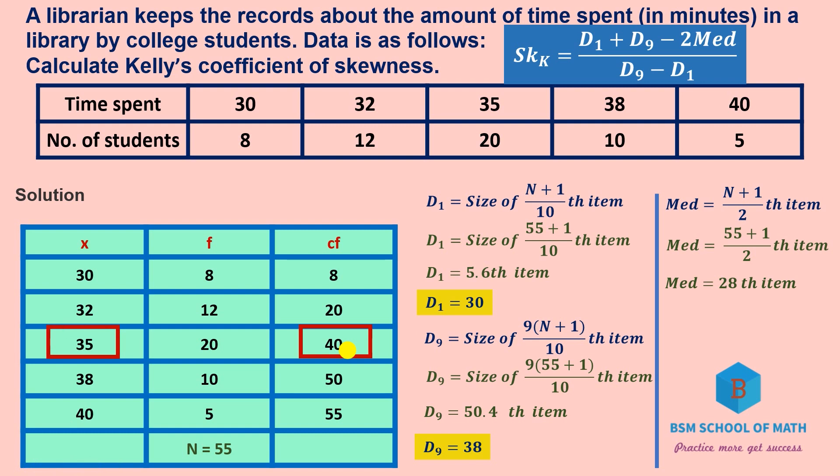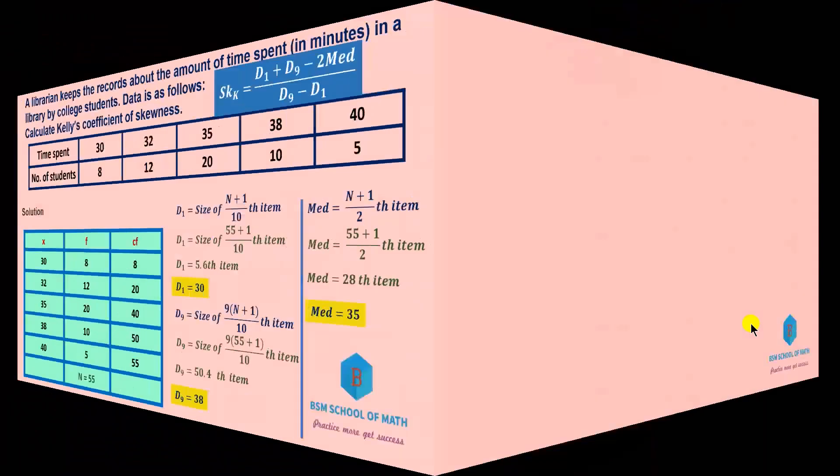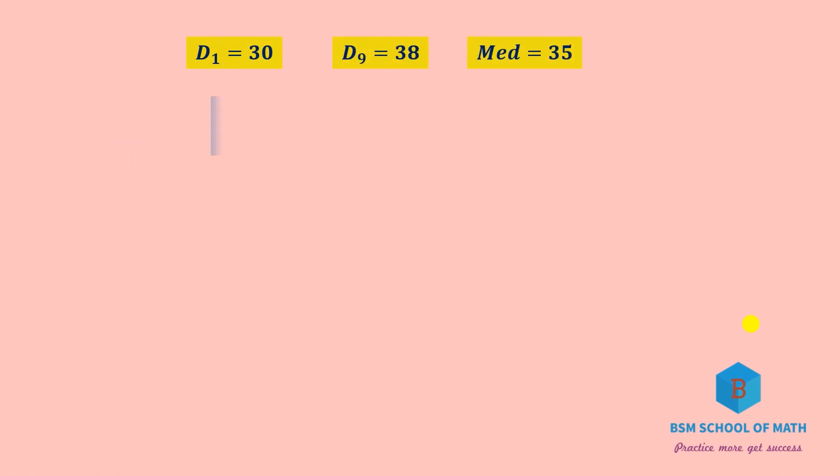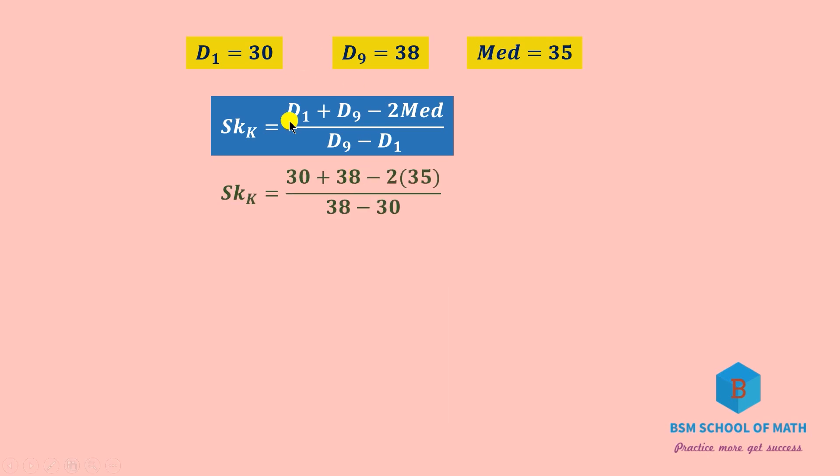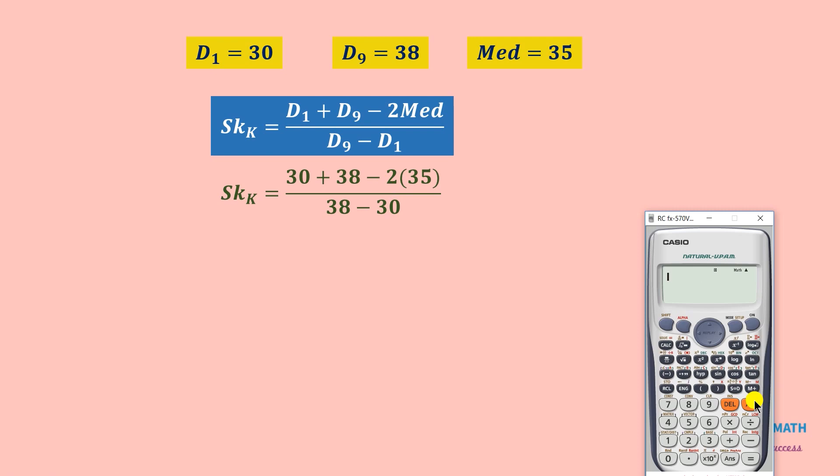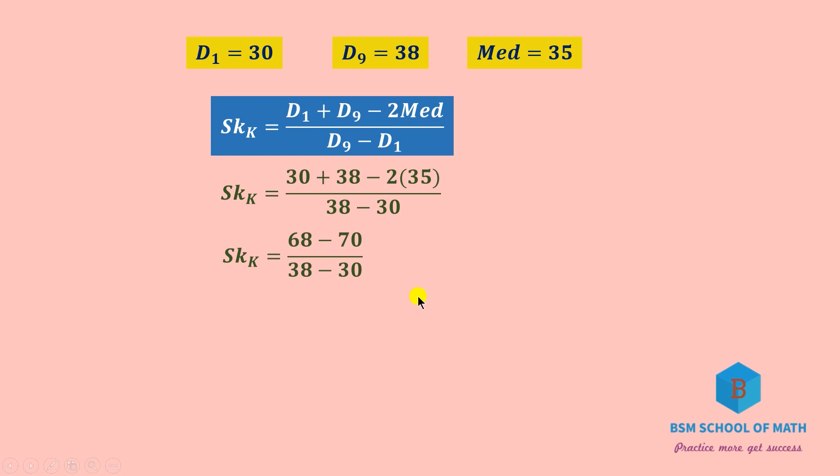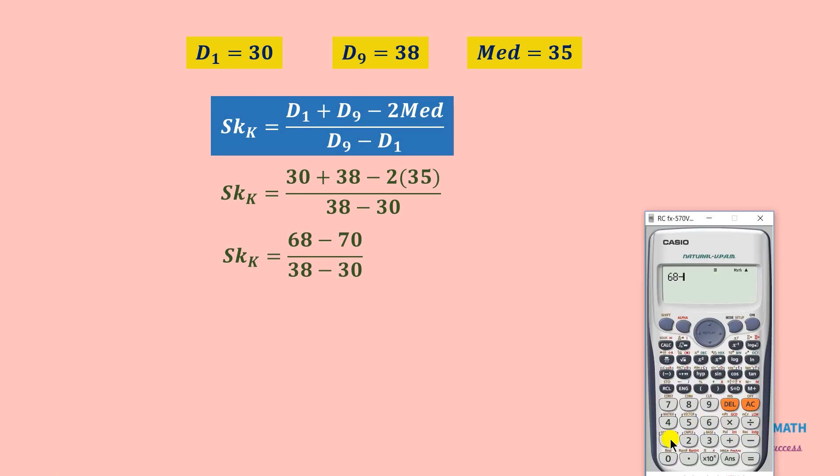So median is 35. Now substitute into the formula: D1 is 30, D9 is 38, median is 35. In the numerator, 30 plus 38 equals 68. Then 2 times 35 is 70, so 68 minus 70 equals minus 2.